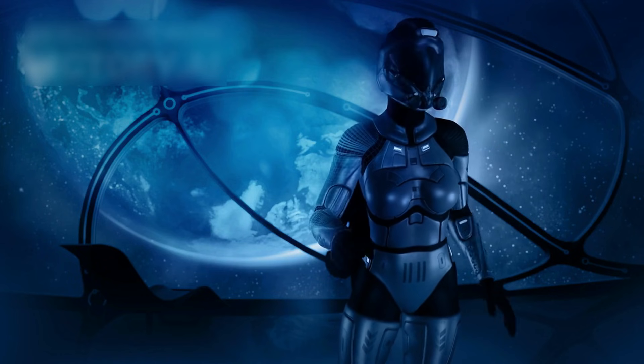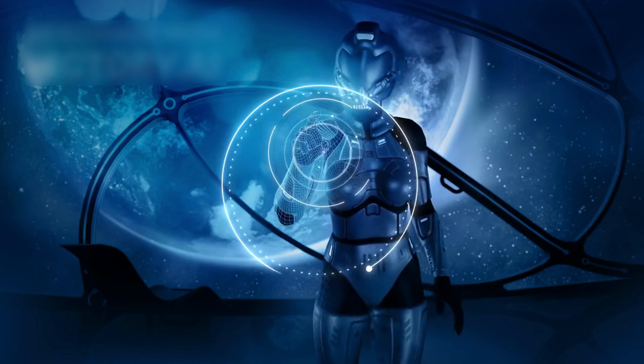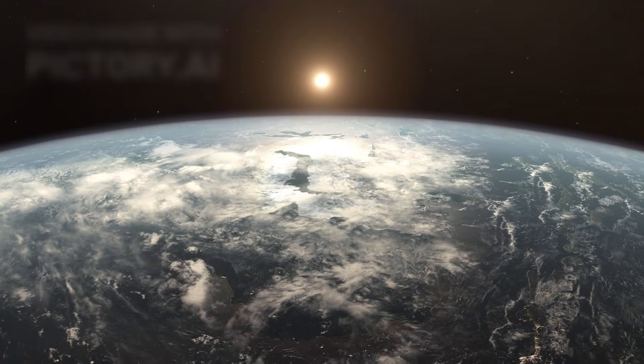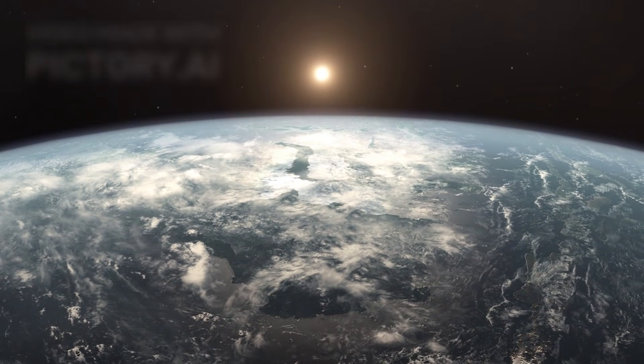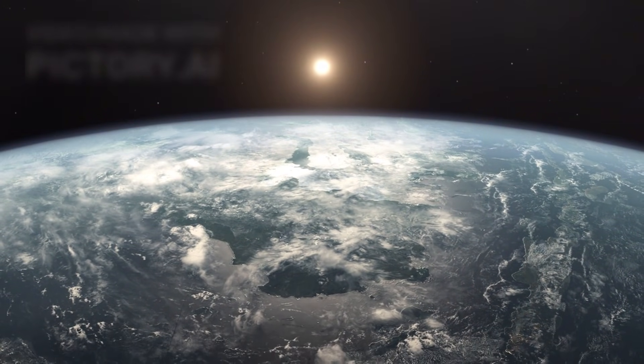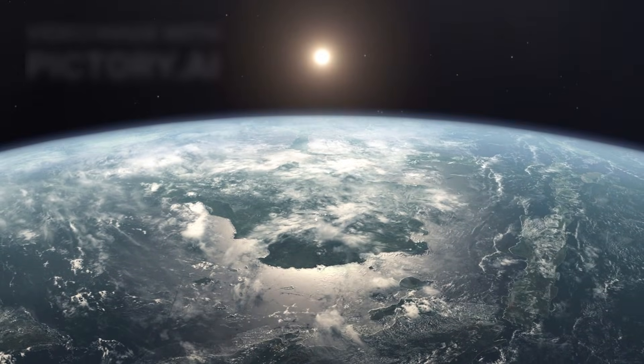Each observation challenges our understanding of planetary formation. If objects like 3IE Atlas are common, then every solar system sends fragments outward, tiny ambassadors drifting across the galaxy.